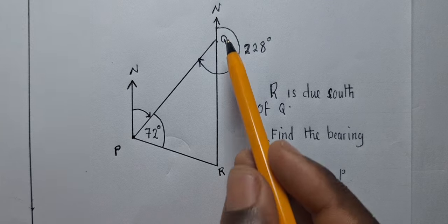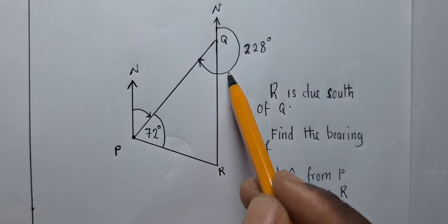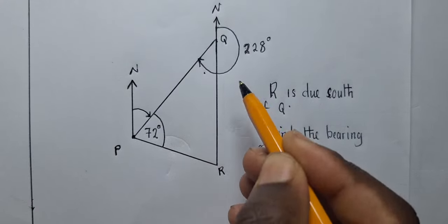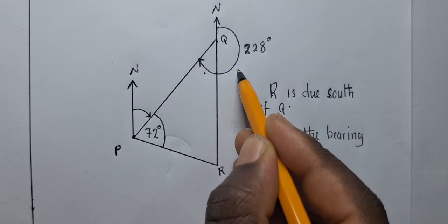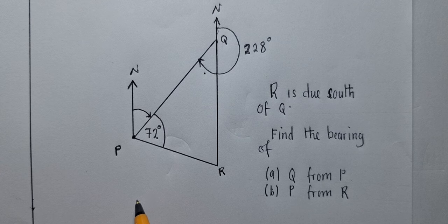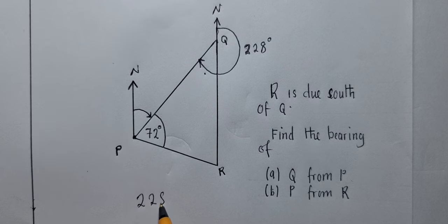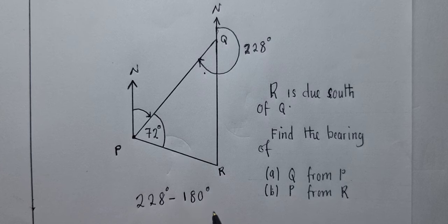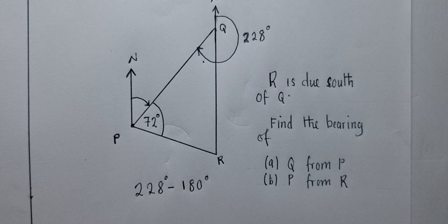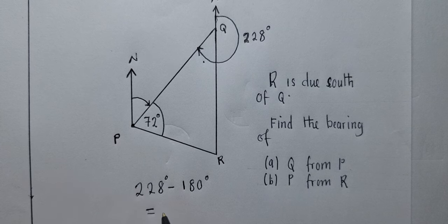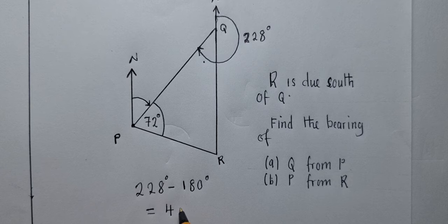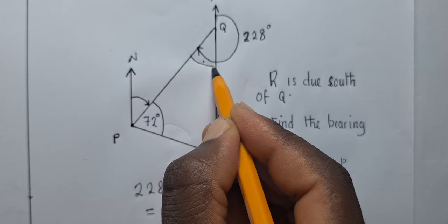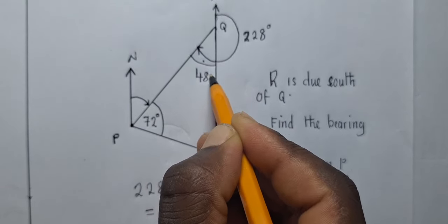So if you're able to see nicely they have given us this angle right here. So we can use property of a straight line to find this angle. We know that this is a straight line. It's 180. So we shall say 228 degrees minus 180 degrees. So when we do this we are going to get 48. So this will simply give us 48 degrees.